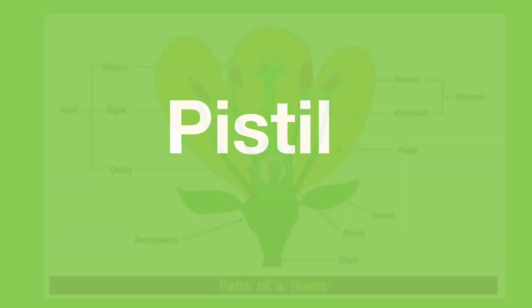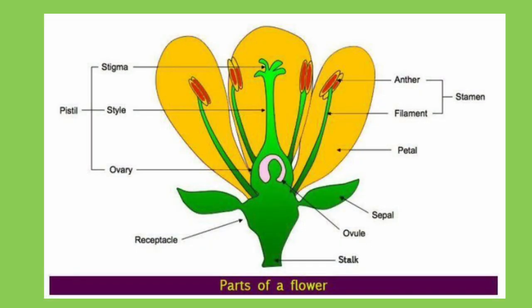It is worth noting — although I have filled this bit in for you on the grid — that the female part of the plant overall is called the pistil. The pistil is made up of the stigma, style, and ovary, and obviously the ovary contains the ovules. So there are three parts to the female pistil in the flower.